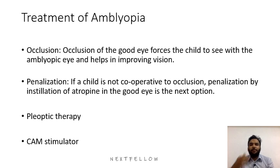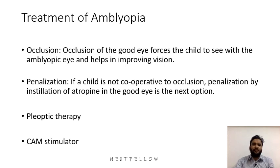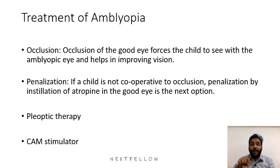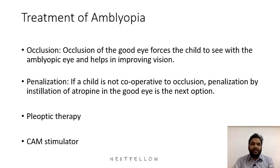Because kids are naughty and may not comply with occlusion — feeling shy to wear a patch — penalization is used for uncooperative children. One drop of atropine is instilled in the good eye so that eye becomes blurred, forcing the child to use the amblyopic eye. Atropine has other side effects which we try to restrict, but if the patient is really uncooperative, penalization is an option.